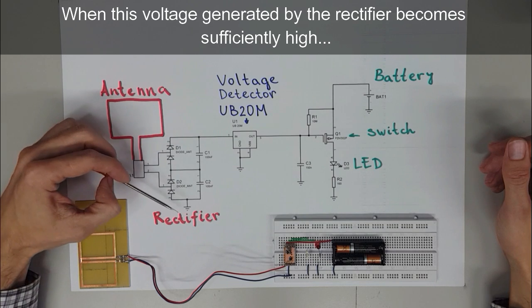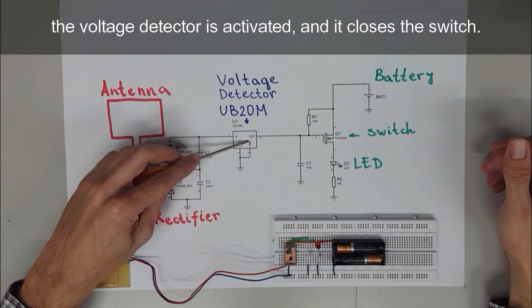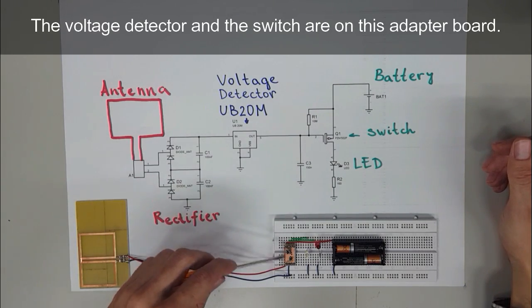When this voltage generated by the rectifier becomes sufficiently high, the voltage detector is activated and it closes the switch. The voltage detector and the switch are on this adapter board.